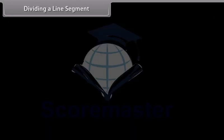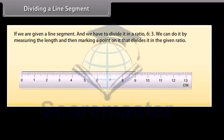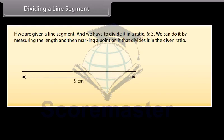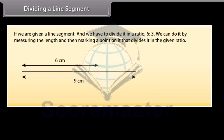If we are given a line segment and we have to divide it in a ratio 6 is to 3, we can do it by measuring the length and then marking a point on it that divides it in the given ratio. But suppose that we do not have any way of measuring it precisely. So we will use constructions to divide a line segment in a given ratio. Let's learn.